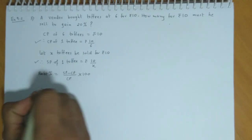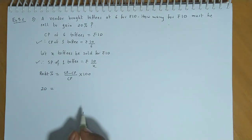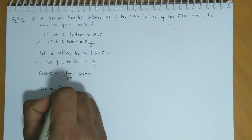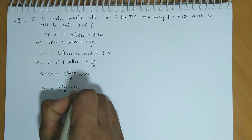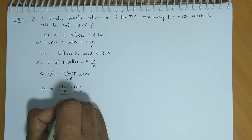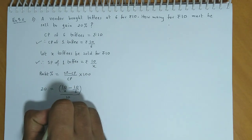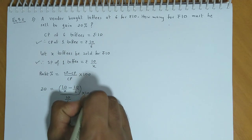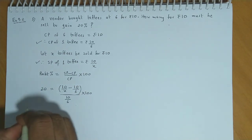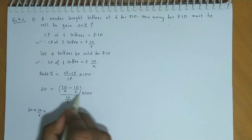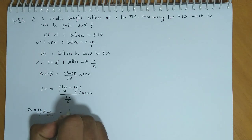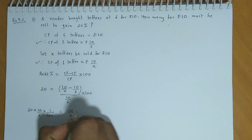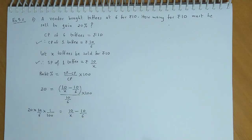20 is equal to selling price 10 by X minus cost price 10 by 6 divided by CP, 10 by 6, into 100. Simplifying, 1 upon 3 is equal to 10 upon X minus 10 upon 6.